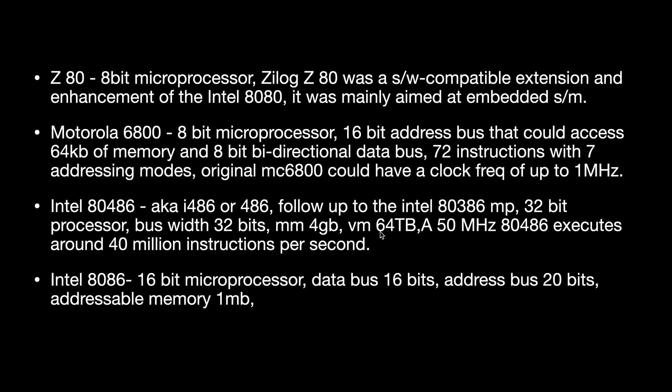The Intel 80486, also known as i486 or 486, is a higher-performance follow-up to the Intel 80386 microprocessor. It is a 32-bit processor with a 32-bit data bus, main memory of 4 GB, and virtual memory of 64 terabytes. A 50 MHz 80486 executes around 40 million instructions per second, and it could reach 50 MIPS peak performance.